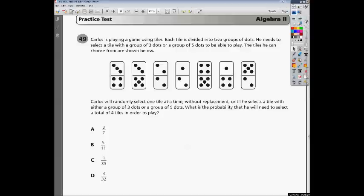The question says, Carlos is playing a game using tiles. They're dominoes, but you can't say dominoes in Tennessee on a state test because that means gambling. Each tile is divided into two groups of dots. He needs to select a tile with a group of three dots or a group of five dots to be able to play. Carlos will randomly select one tile at a time without replacement until he selects a tile with either a group of three dots or a group of five dots. What is the probability that he will need to select a total of four tiles in order to play?